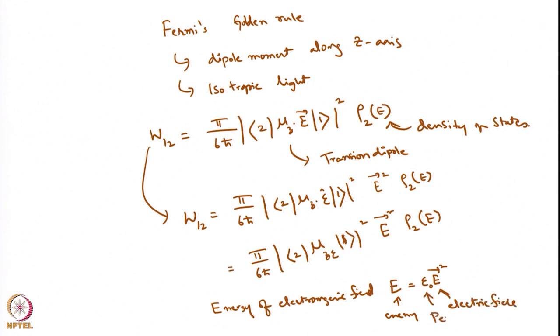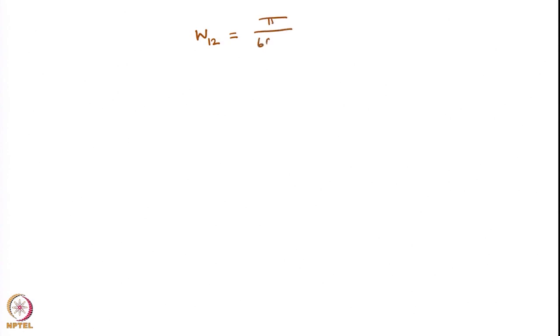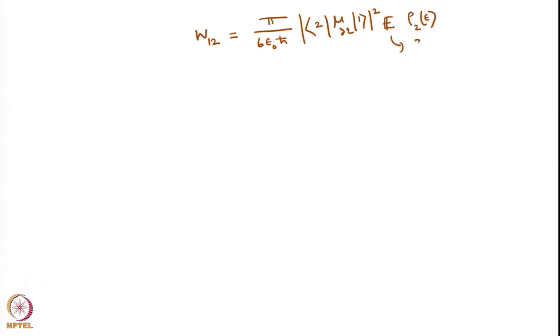ε₀ is the permittivity of free space. So I can rewrite this equation: W₁₂ = (π/6ε₀ℏ) · |⟨2|μ_z·ε|1⟩|² · E · ρ(2) of electromagnetic radiation.